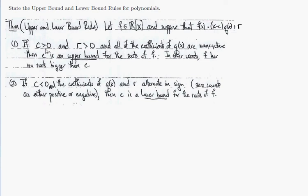If we're attempting a positive root, so we have (x - c) times q(x) plus r, and the remainder r is positive and all the coefficients of q are non-negative, then c is an upper bound for the roots of f. In other words, f has no roots bigger than c.